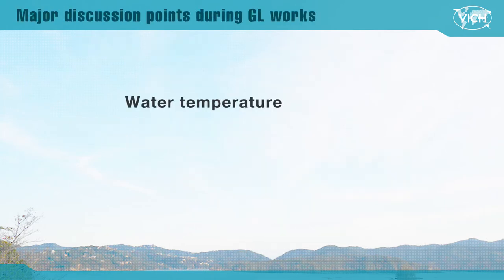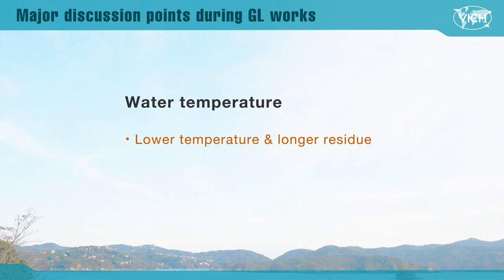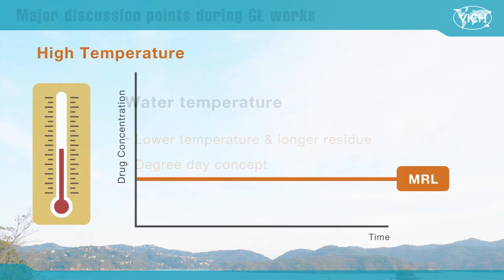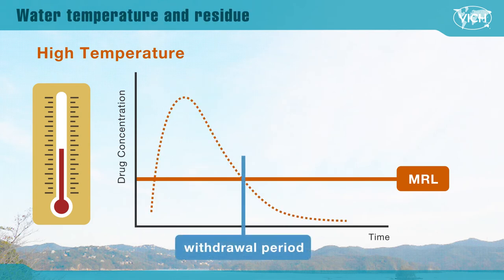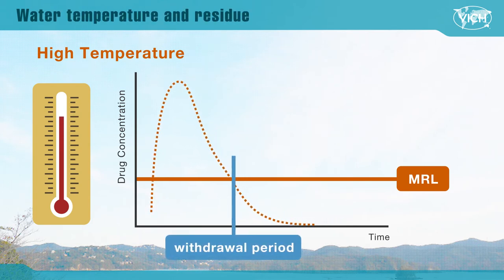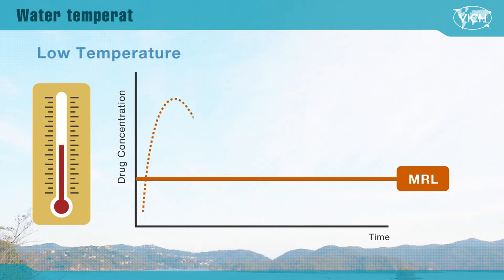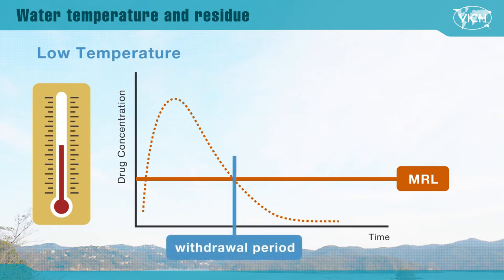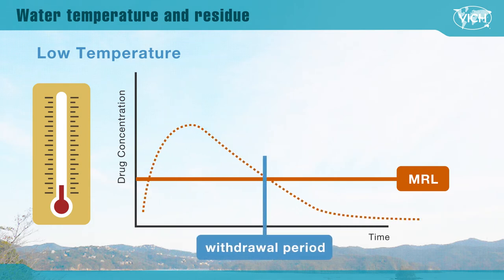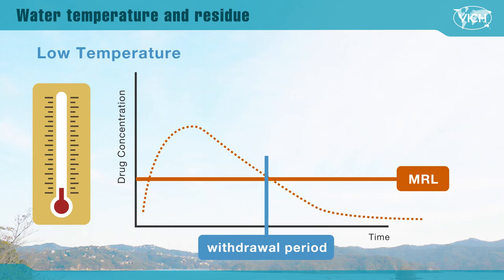Water temperature was the most important discussion point. Water temperature and residue kinetics correlate, and in most cases, the lower the temperature, the longer a residue can be expected to persist. Concerning this relationship, the degree-day concept was discussed. As the temperature increases, fish is more active, eats more, and metabolizes faster. Thus, the residue peak is higher but it decreases quicker, and the withdrawal period is generally shorter. If the temperature decreases, fish is less active, eats less, and metabolizes at a slower rate. Thus, the residue peak is lower but it decreases more slowly, and the withdrawal period is usually longer.